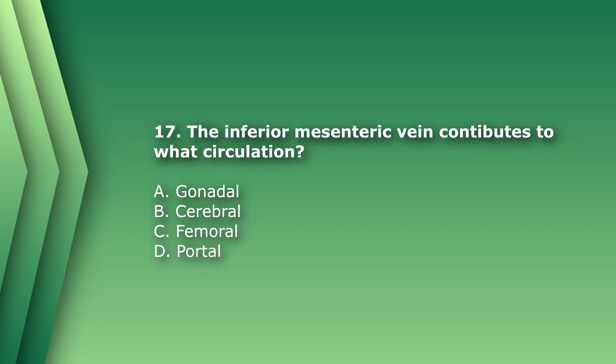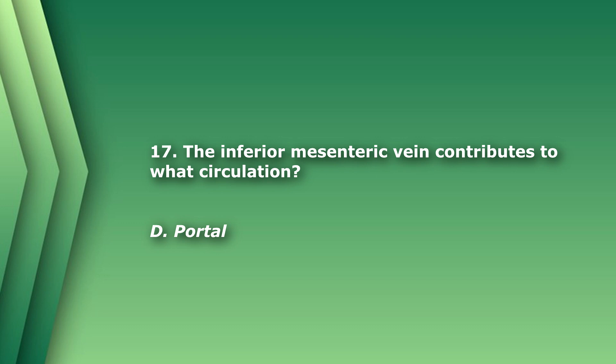Question 18: The inferior mesenteric artery contributes to what circulation? A) gonadal, B) cerebral, C) femoral, or D) portal. The answer is D) portal. The inferior mesenteric vein, along with the superior mesenteric vein and the splenic vein, form the portal vein.